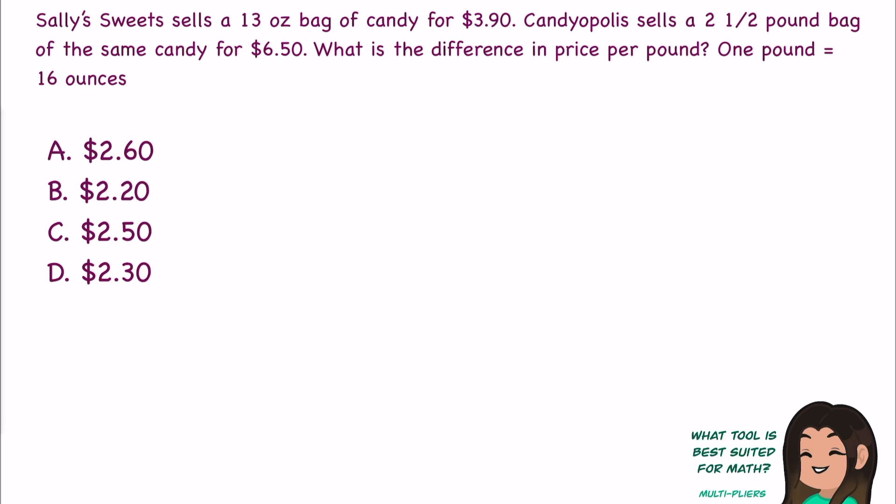Sometimes you're going to be asked to do a ratio question that requires you to figure out the difference between some type of unit rate. Here's our question. Sally's Sweets sells a 13-ounce bag of candy for $3.90. Candyopolis sells a 2.5-pound bag of the same candy for $6.50. What is the difference in price per pound, one pound equaling 16 ounces?